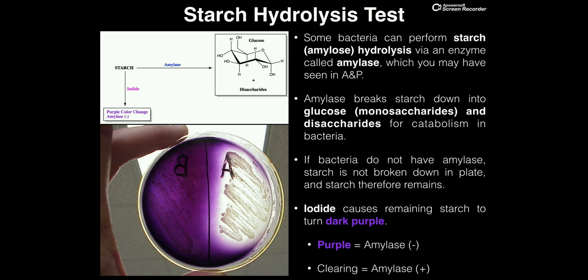You may have seen amylase in a class like anatomy and physiology, because we too actually possess this enzyme. Starch is a giant polysaccharide — a giant polymer of individual glucose units — and this enzyme amylase can break it down into small disaccharides and then the monosaccharide glucose. In the case of bacteria, they can perform this reaction to produce glucose and disaccharides, and then use those pieces to produce energy in catabolism.